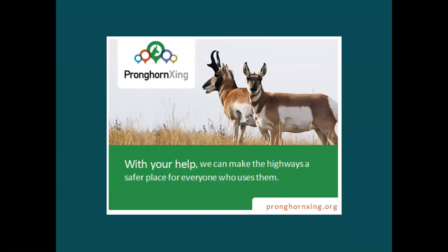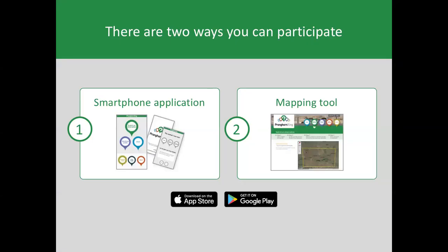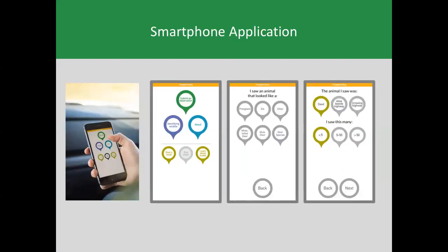This is a citizen science initiative where we really wanted to engage citizens who are driving the highways to document where they're seeing pronghorn adjacent to the highway and where they're seeing pronghorn get hit. This initiative allows citizens to participate in two ways: they can use a smartphone application, or they can submit observations using an online mapping tool. We only promote people using the smartphone application if they are a passenger in a vehicle. The app was modeled after a program called Roadwatch BC that Mastakis was involved in, and it's very simplified.